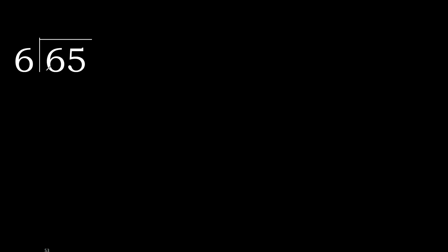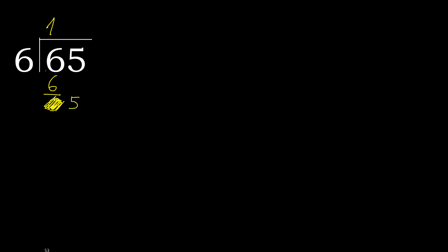65 divided by 6. 6 is not less, therefore start with 6. Here, 6 multiplied by which number is nearest to 6 but not greater? 6 multiplied by 2 is 12 — 12 is greater. 6 multiplied by 1 is 6 — not greater. 6 minus 6 is 0. Next, bring down 5. 5 is less, therefore next.